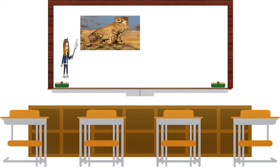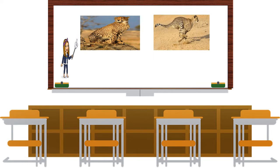I have here a picture. What picture is this? Alright, this is a cheetah. Have you heard that the cheetah runs fastest among the land animals? That's right — the cheetah runs fastest among the land animals. How fast does it move? The cheetah moves at a speed of 20 meters per second.